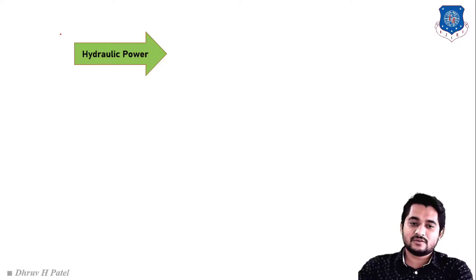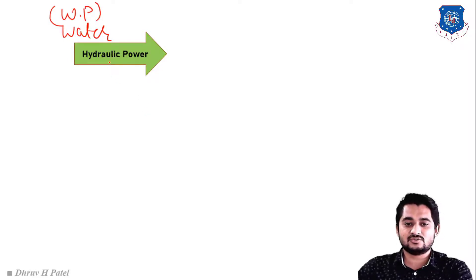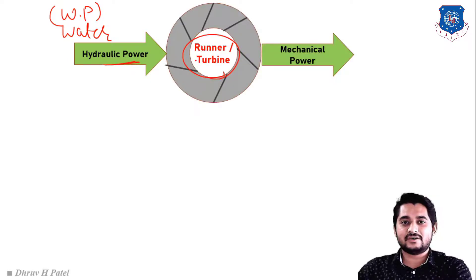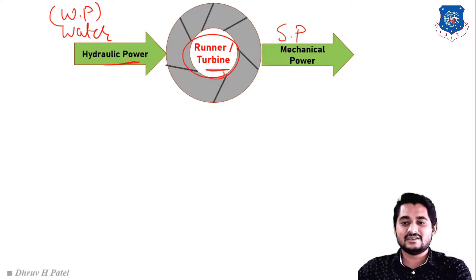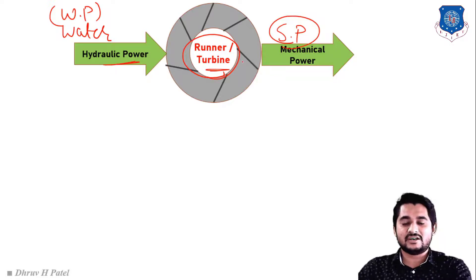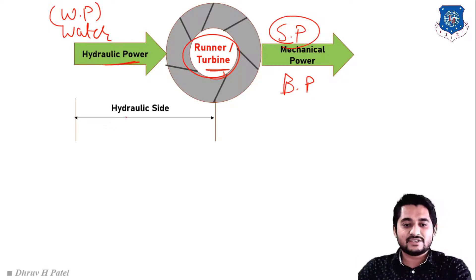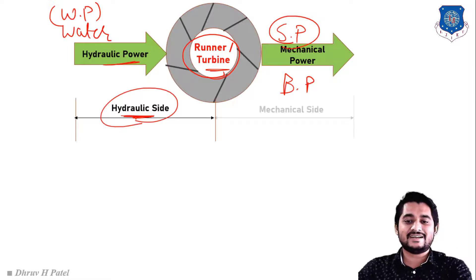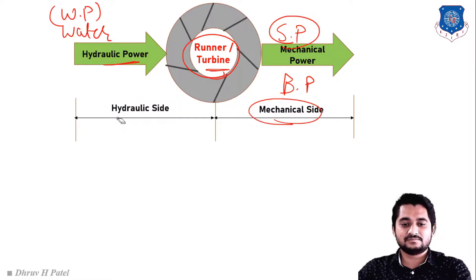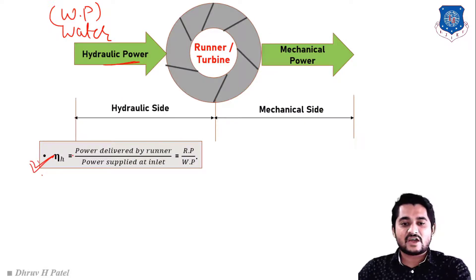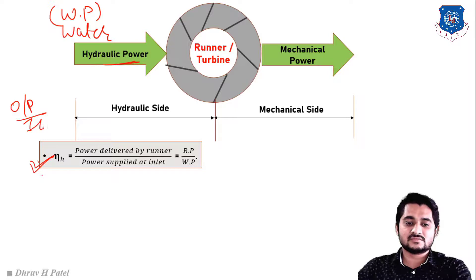Now let us understand various heads and efficiencies of turbines. For a hydraulic turbine, the input is water power — also called hydraulic power. Water is applied to the turbine runner, and shaft power is obtained at the output. The left-hand side of this assembly is the hydraulic side and the right-hand side is the mechanical side.